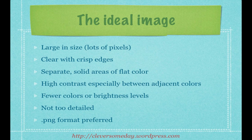Because the trace is so basic, the image you start with is the biggest determiner of how happy you will be with the results. The ideal image is large and clear with crisp edges. It would contain solid areas of flat color separated by a thick, dark, or light border. There should be high contrast, especially between adjacent colors, and the fewer the colors or brightness levels, the better. You don't want an image so detailed that you will not be able to cut it at the desired size. PNG format is preferred if you have a choice because PNGs can have transparent backgrounds and have fewer artifacts for a cleaner trace. You probably won't ever have an ideal image, but this list will help you pick when you do have some say in the matter.